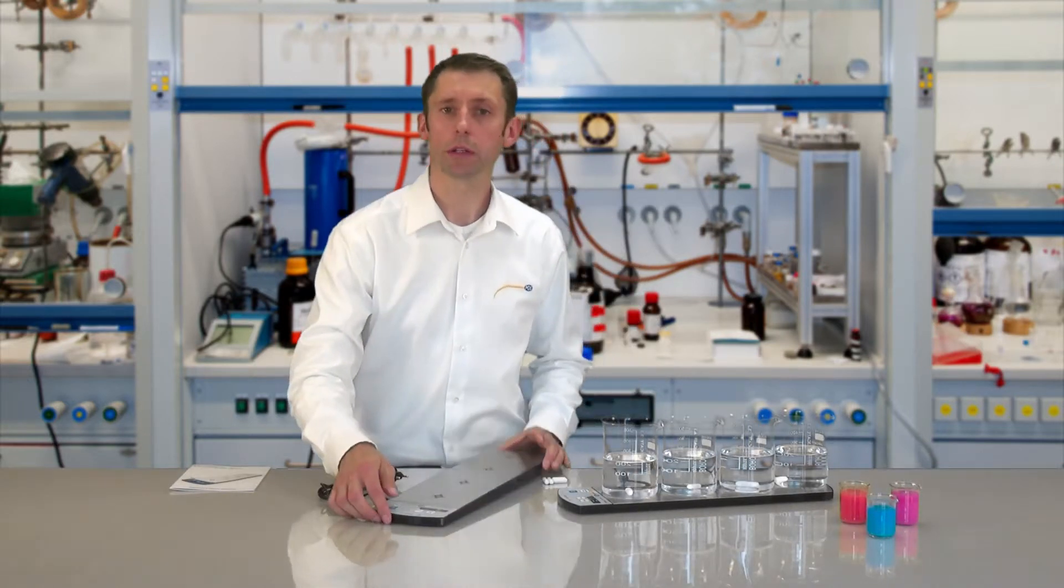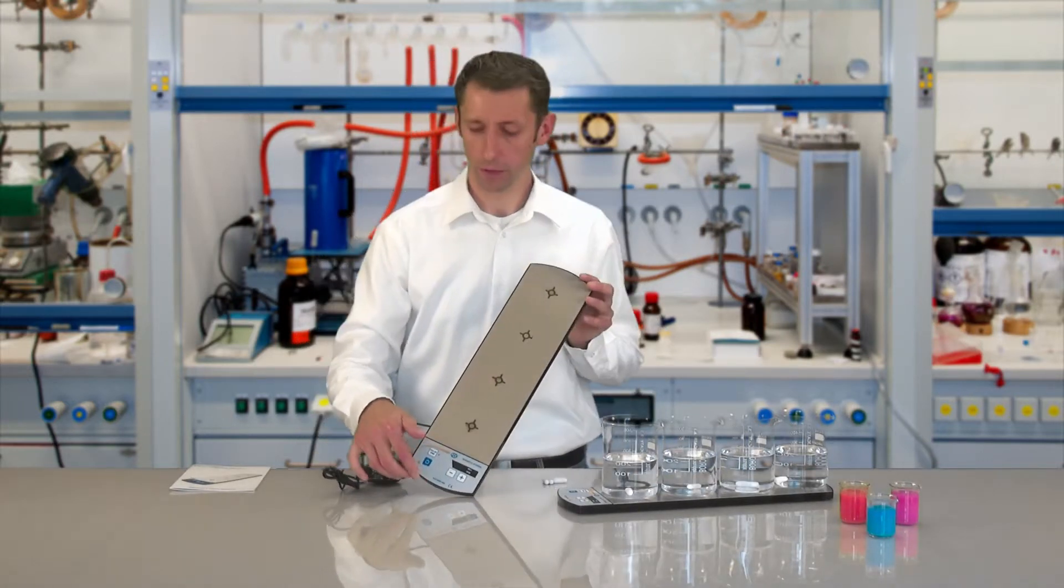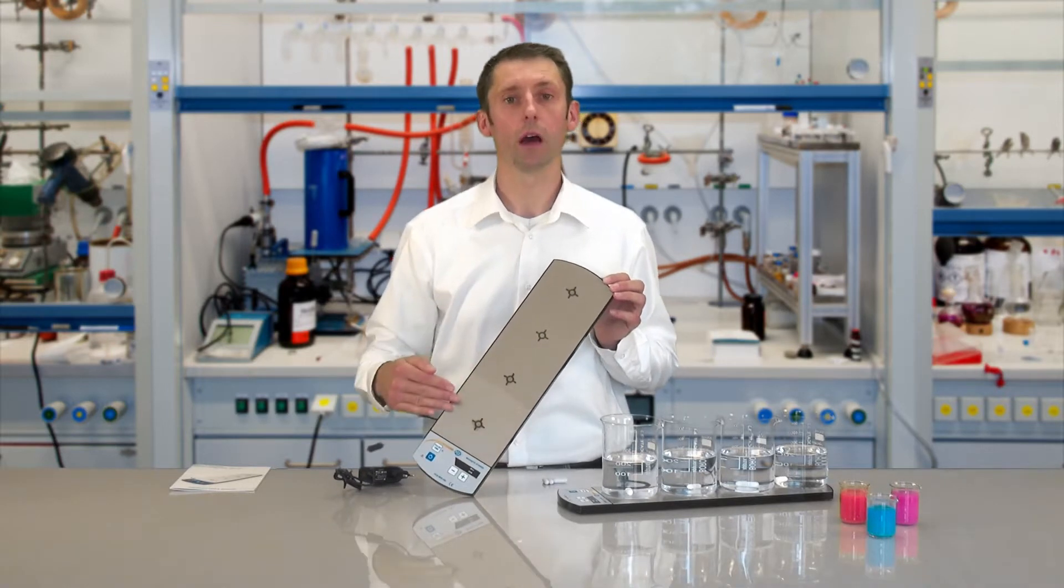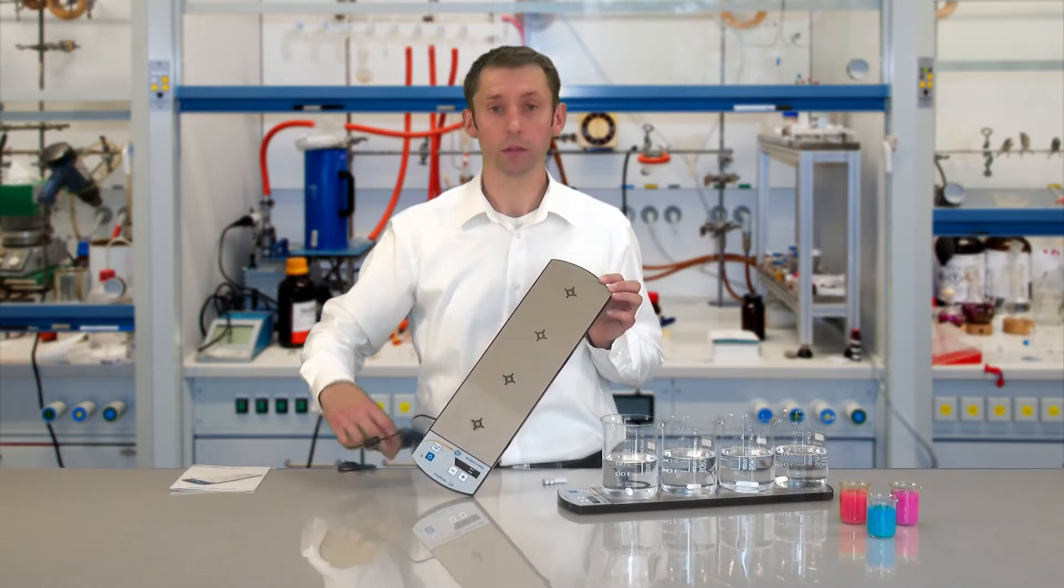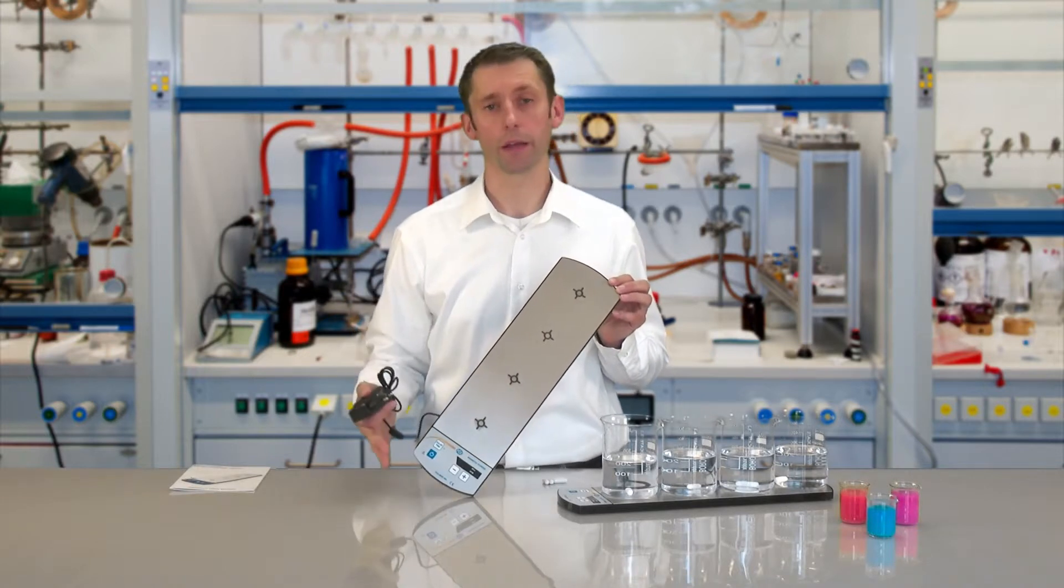The Magnet Stirrer consists of a stable plastic casing with a stirring surface of stainless steel. The connecting cable has a length of around 1 meter.